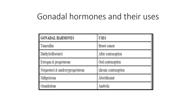What are the gonadal hormones and their uses? This is a very important slide. Tamoxifen is used for breast cancer. Diethylstilbestrol is used for post-coital contraception. Estrogen and progesterone for oral contraception. Mifepristone is an abortifacient. And oxandrolone is anabolic. Be thorough with this as well.